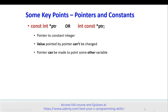Let's get started with some key points about Pointers and Constants. The declaration 'const int *ptr' or 'int const *ptr' is a declaration for a Pointer to a Constant Integer. In this case, the value pointed by the pointer can't be changed. However, the pointer can be made to point to some other variable.